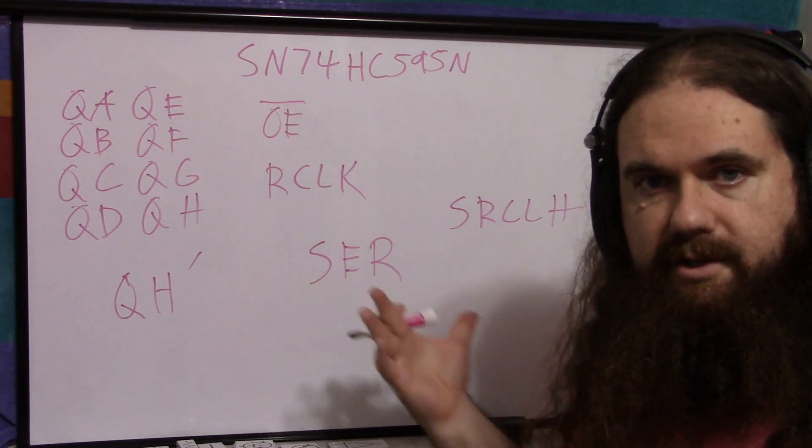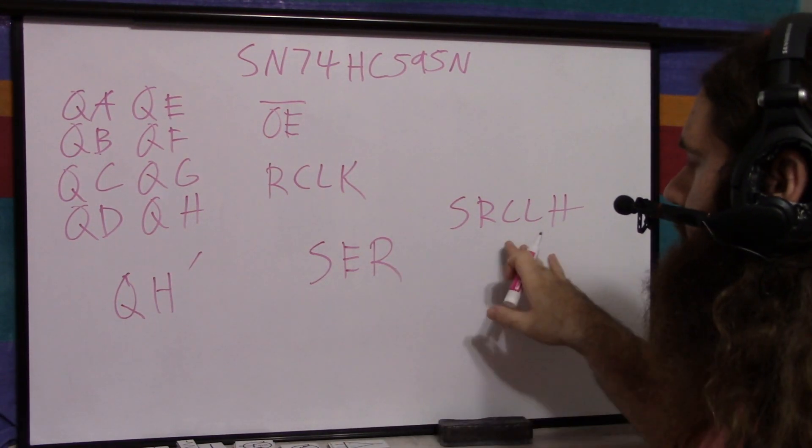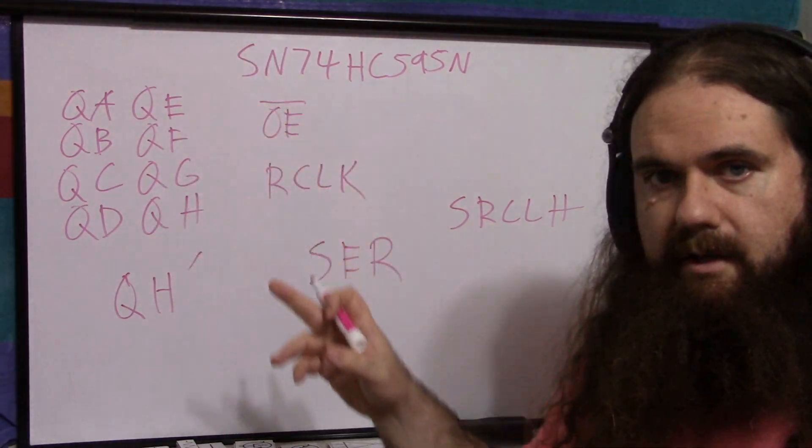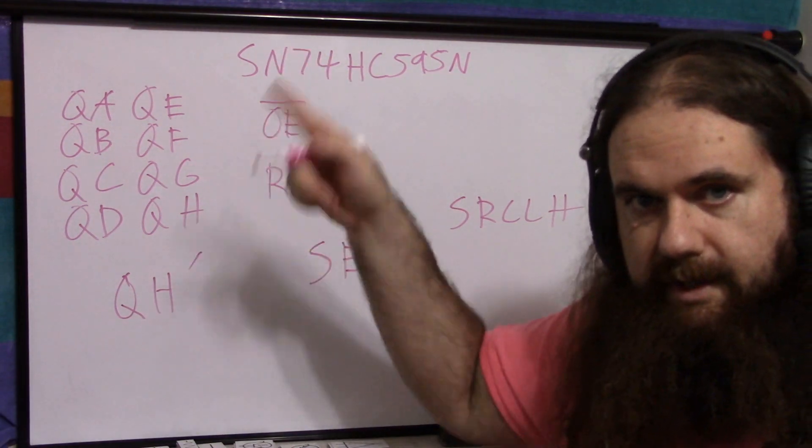Then you've got SR clock. You pulse the clock and it shifts in. So whatever value is on SER, when you do SR clock, that'll become A, and then H will just drop off the end unless you have it connected circularly.